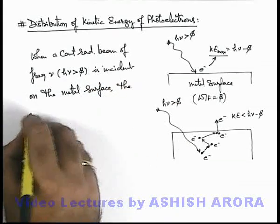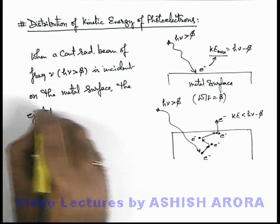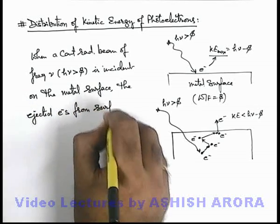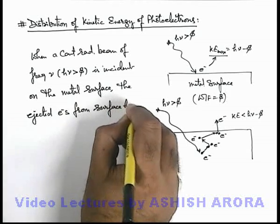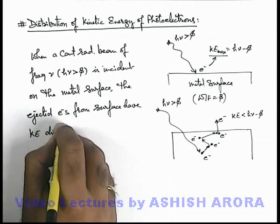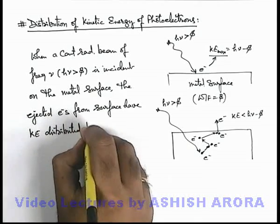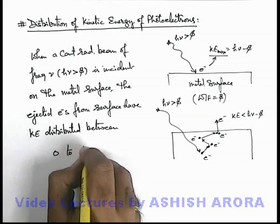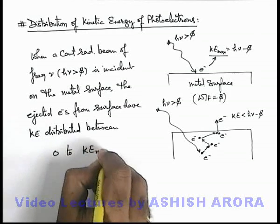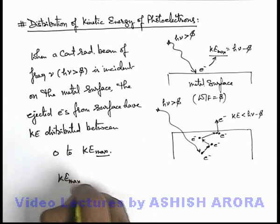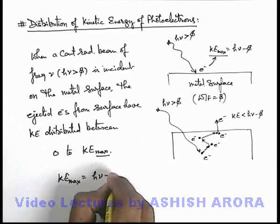the ejected electrons from the surface have kinetic energy distributed between zero to KE_max, where in this situation KE_max, the maximum possible kinetic energy, is given as hν minus φ.